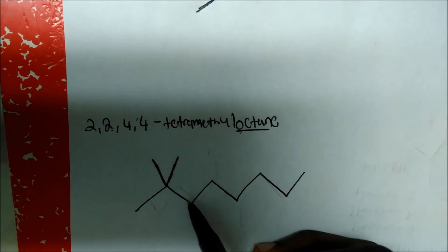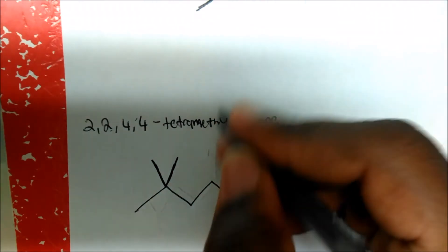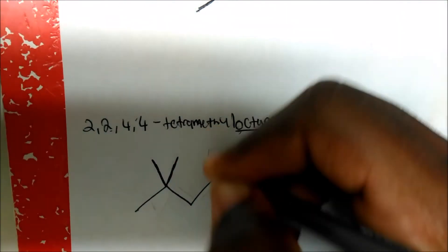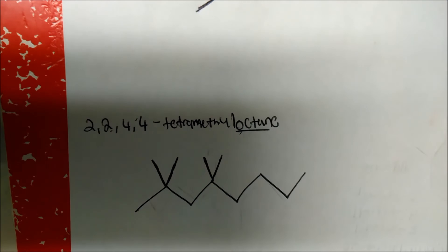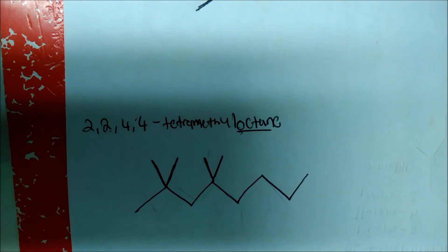You give each substituent, if they're on the same carbon, a number. So 2, 2, 4, 4. Carbon 2, 3, 4. On carbon 4, we actually have two methyl groups also. So this is how the compound will look for that. They're on the same carbon, you got to give both of them numbers.